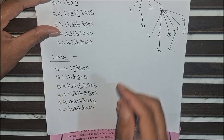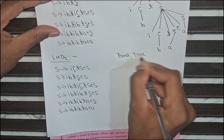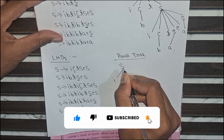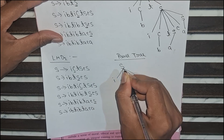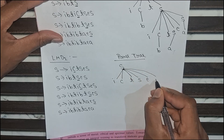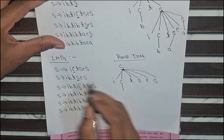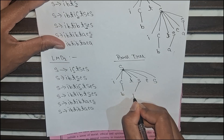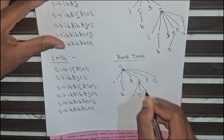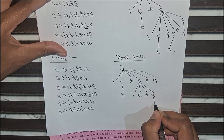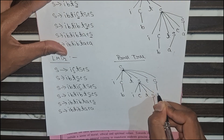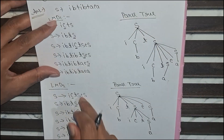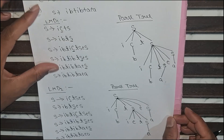Now I will draw the parse tree for LMD2. The initial variable is S, and I have taken it as i c t S e S. After that I put c as b, and S as i c t S. Then I put this S as a and this remaining S also as a. From the figure I can clearly see that the parse trees of LMD1 and LMD2 for the same string are different. So this grammar is ambiguous.